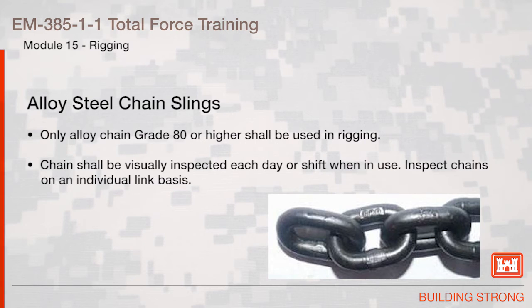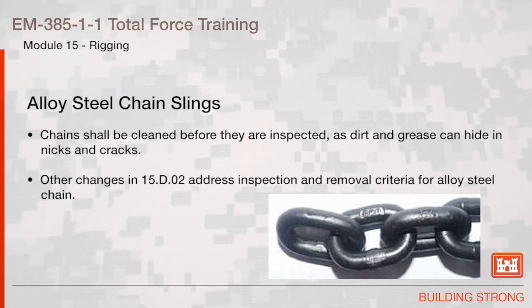Alloy Steel Chain Slings. Only alloy chain, grade 80 or higher, shall be used in rigging. Chain shall be visually inspected each day or shift when in use, inspected on an individual link basis. Chains shall be cleaned before they are inspected, as dirt and grease can hide nicks and cracks. Other changes in Section 15 D02 address the inspection and removal criteria for alloy steel chain.